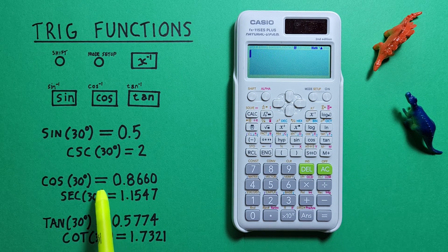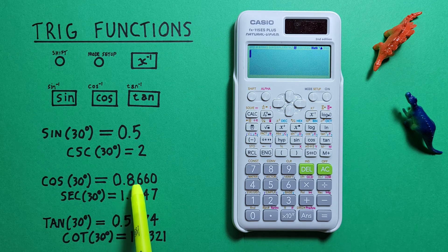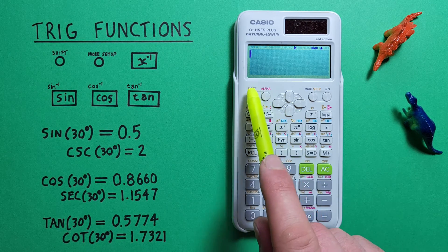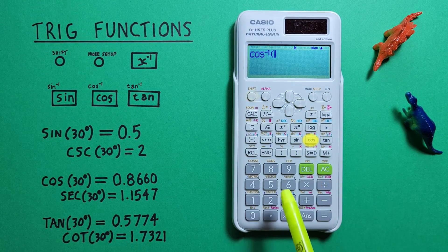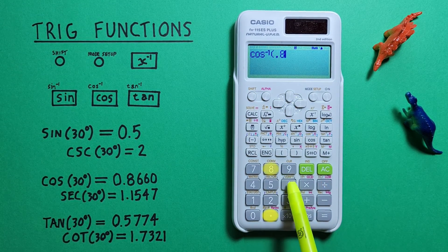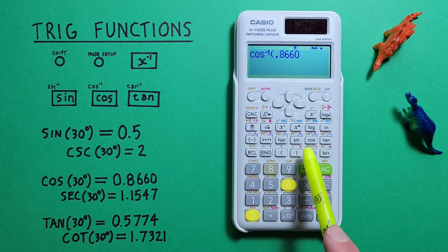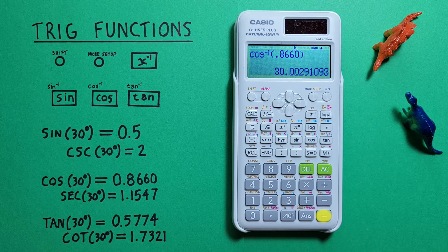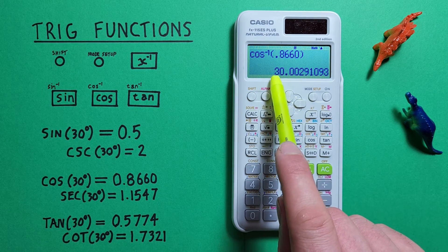For the arc cos, we'll use 0.8660, which was our rounded result. So you go shift cos, 0.8660, close our bracket, and press equals, and we get what would round to 30 degrees.